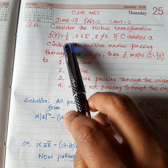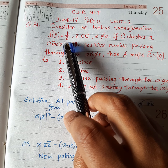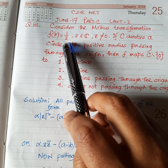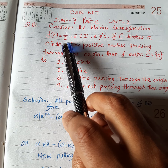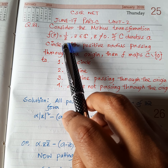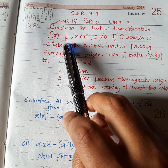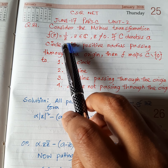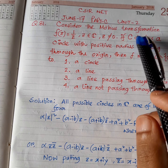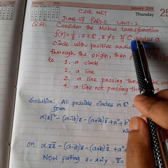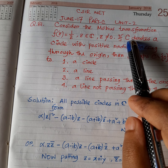The proposition states: under the function f(z) = 1/z, the image of a line through the origin is a line through the origin; the image of a line not through the origin is a circle through the origin; and the image of a circle through the origin is a line not through the origin.